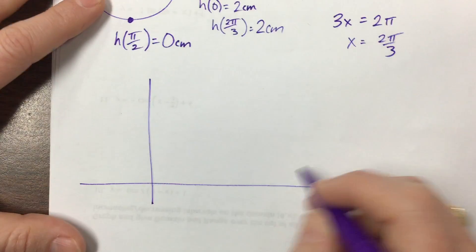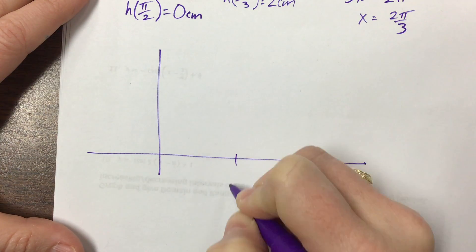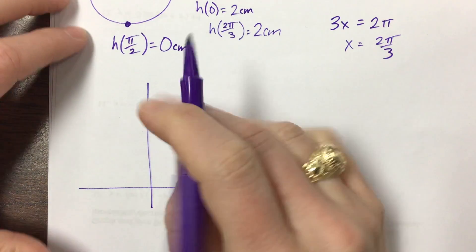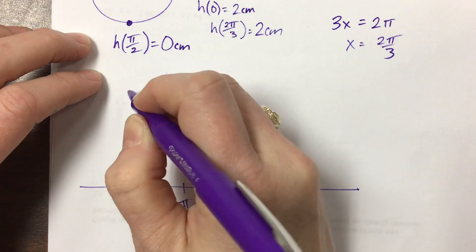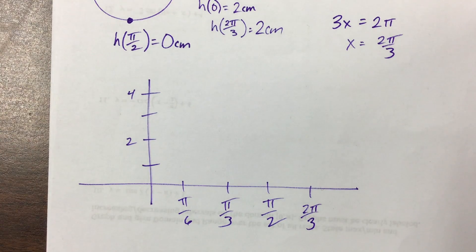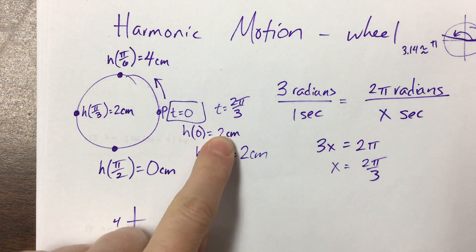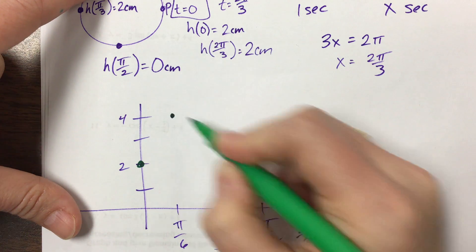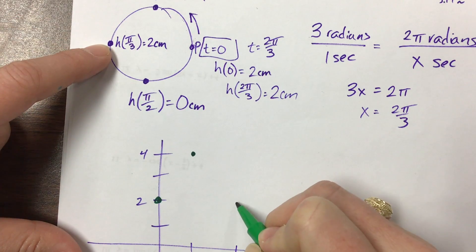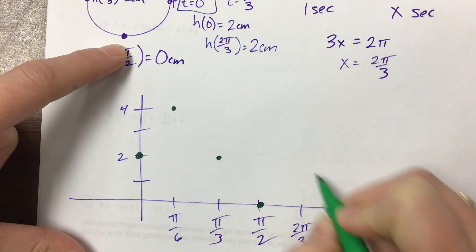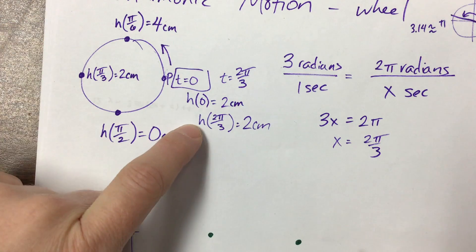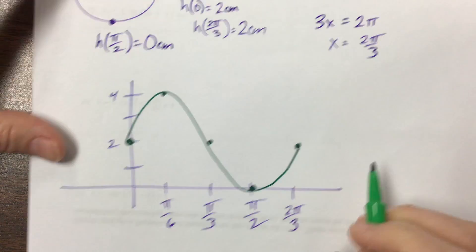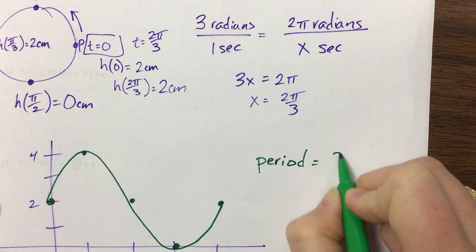When I go to graph this, we have 2π/3 as the period, π/6 is the peak, and π/2 is where it crosses down. At time 0, our height was 2 centimeters. At π/6 we're up at the top at 4, then back to 2 at π/3, down to 0 at π/2, and back to 2 at 2π/3. Hopefully you recognize that this looks like a sine curve — that's one period — with period 2π/3.